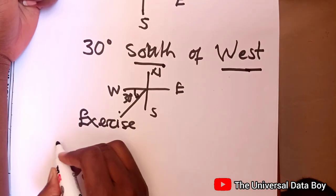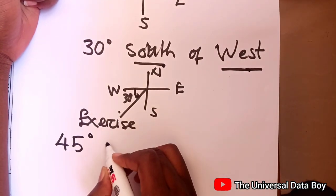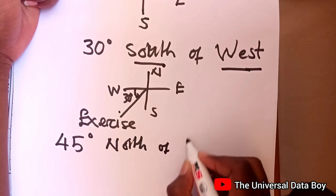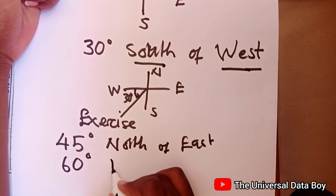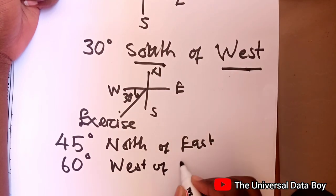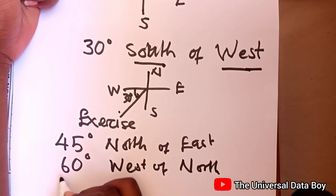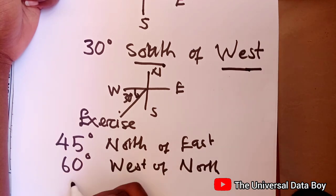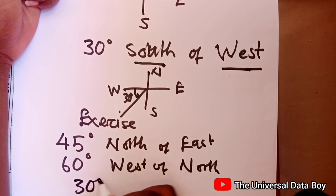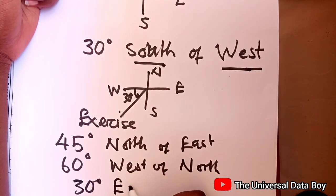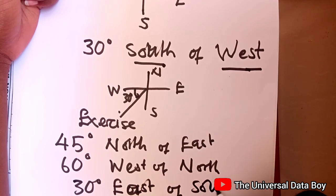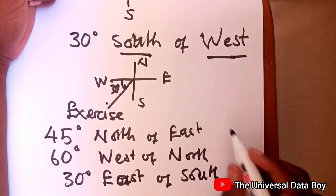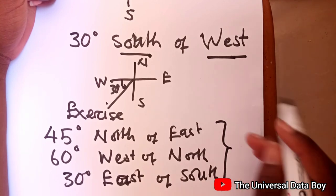So the first one is 45 degrees north of east. The second is 60 degrees west of north. So now try to graph this and then once you try them, I will go over them in a minute.